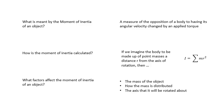The moment of inertia, a measure of the opposition of a body to having its angular velocity changed by an applied torque, which is a very scientific way of saying how hard it is to get an object turning, to change the way that it's turning. I would learn that sentence, actually. How is the moment of inertia calculated? We imagine the body to be made up of point masses, a distance r from the axis of rotation. Then it's Σmr². It's the sum of all the little mr squareds. What factors does the moment of inertia of an object depend on? And this little question I've seen on a few past papers, so make sure you learn this. The mass of the object, how the mass is distributed, and the axis that it will be rotated about.